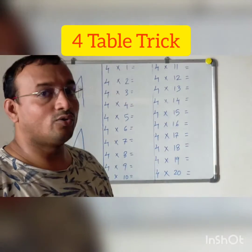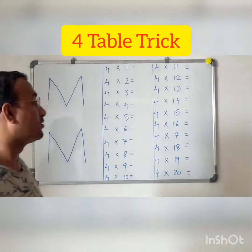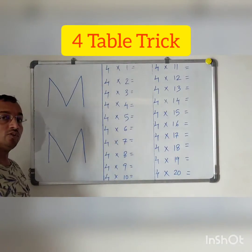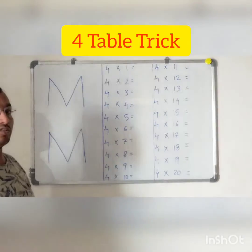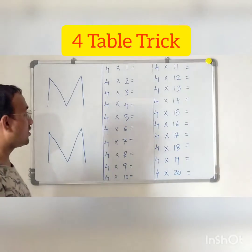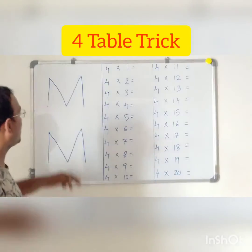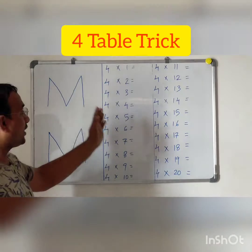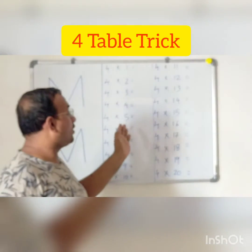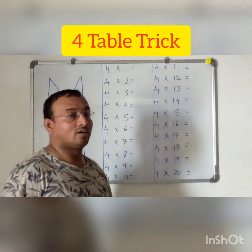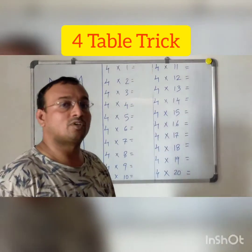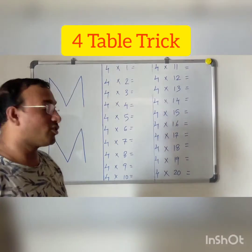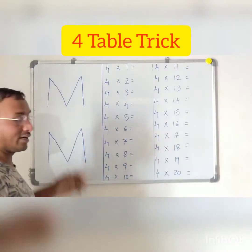Let us see how to write the 4 table using these tricks. I am going to use 2 tricks. For the first trick, I am going to take 2 yams and write the first 10 steps. And from that 4 table, I am going to write 10 more steps using another trick. Let us go with the first trick.